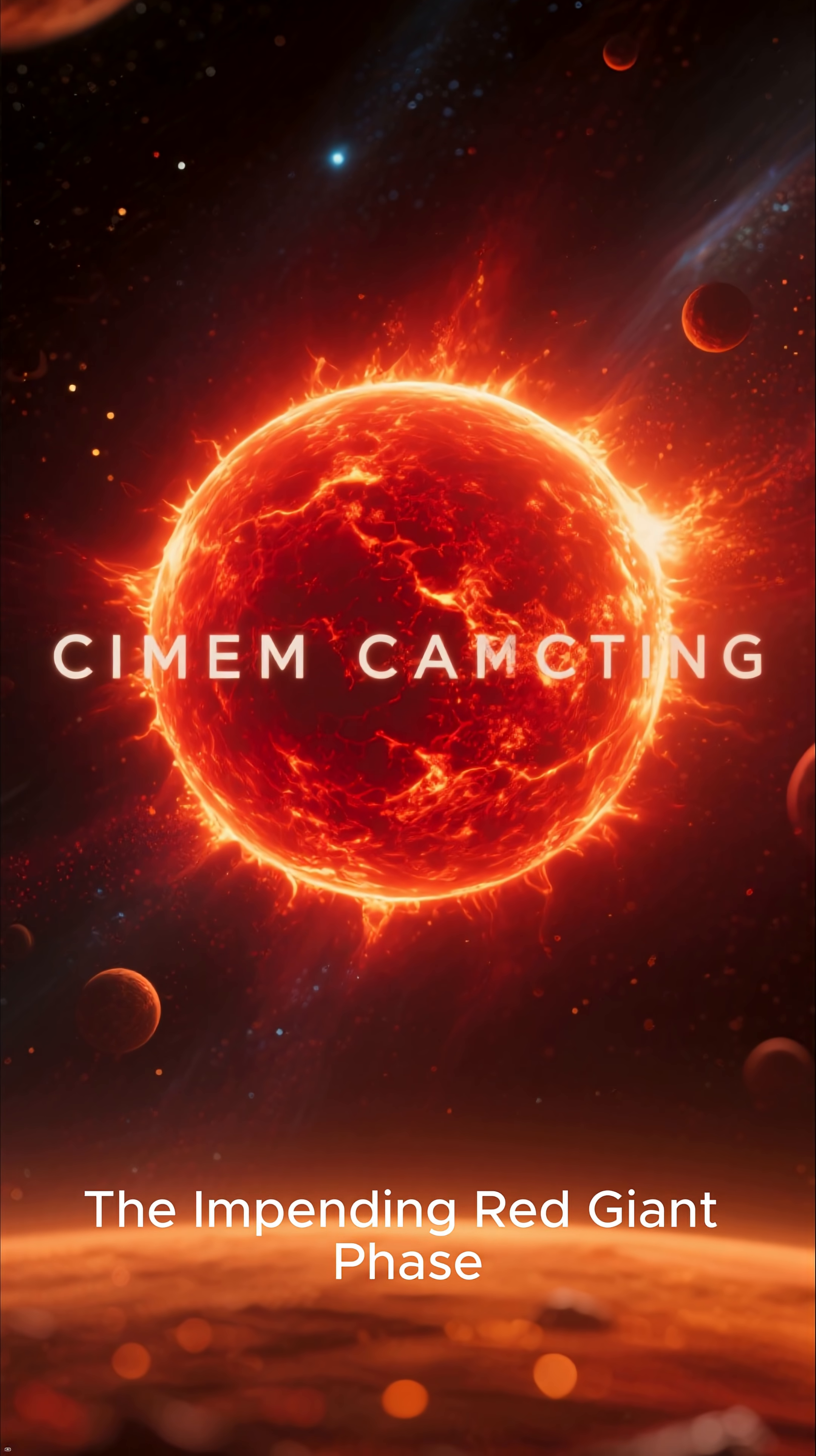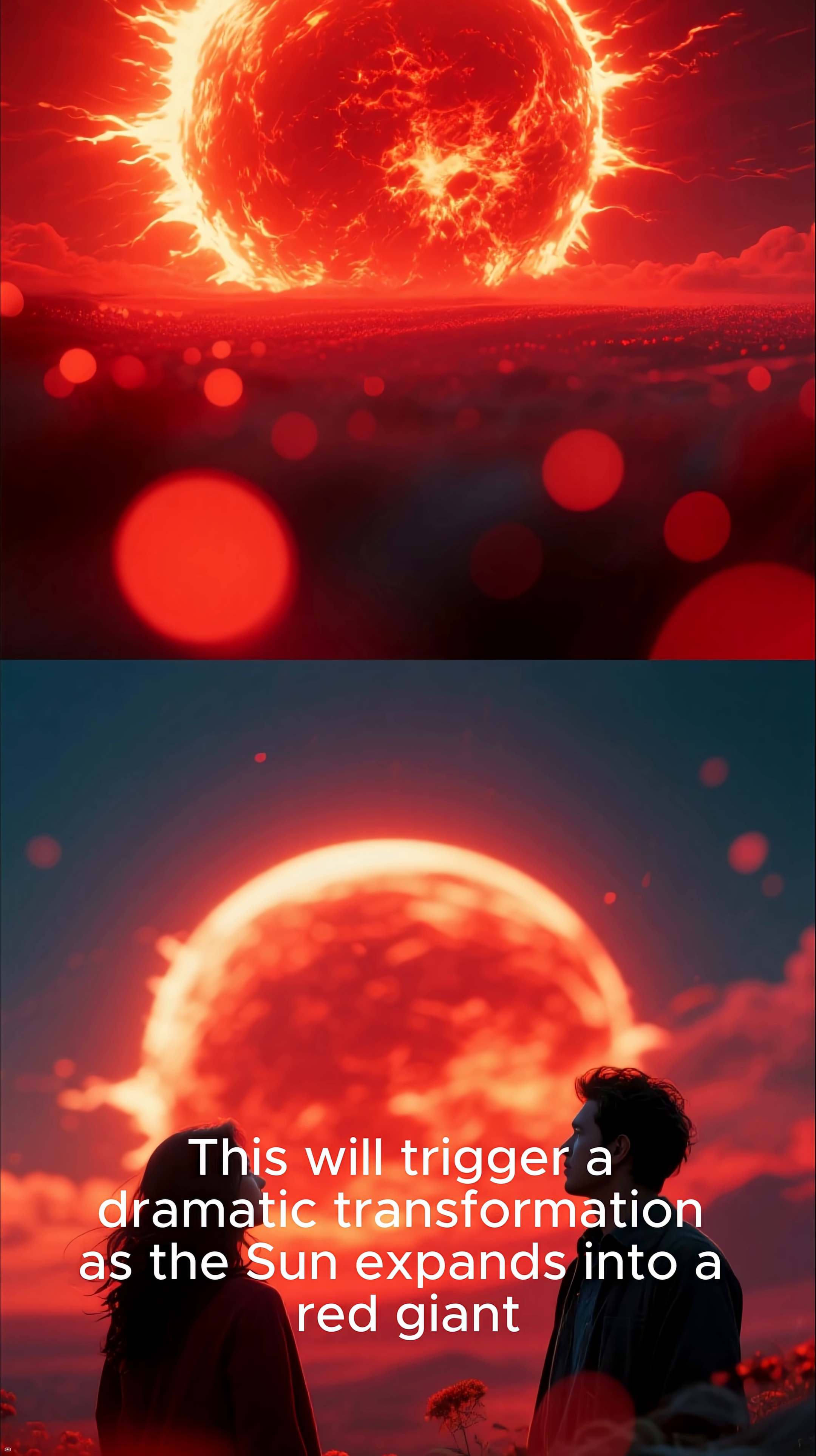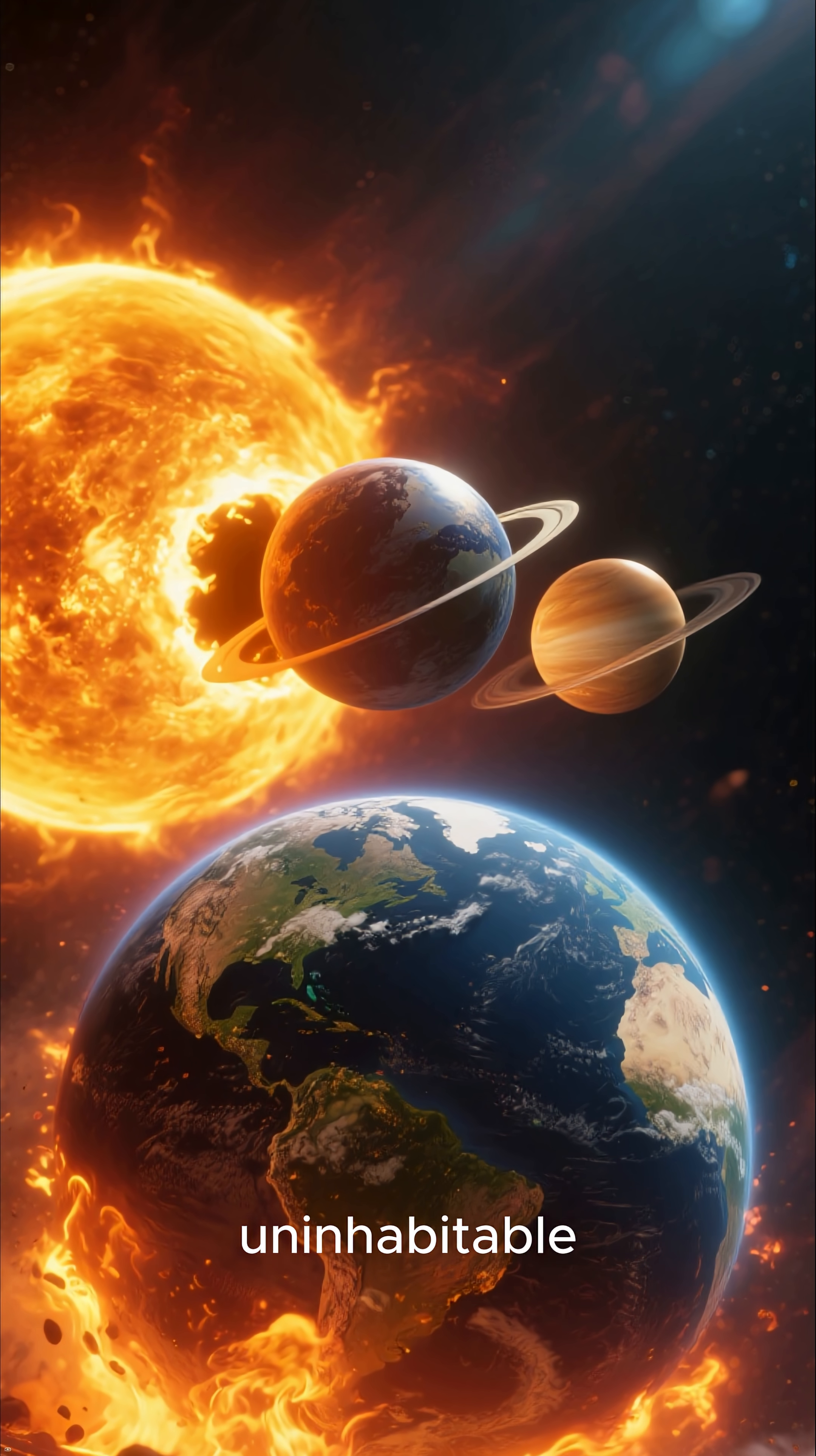The impending red giant phase. In roughly 5 billion years, the Sun will exhaust the hydrogen fuel in its core. This will trigger a dramatic transformation as the Sun expands into a red giant. During this phase, it will engulf Mercury and Venus, and likely render Earth uninhabitable.